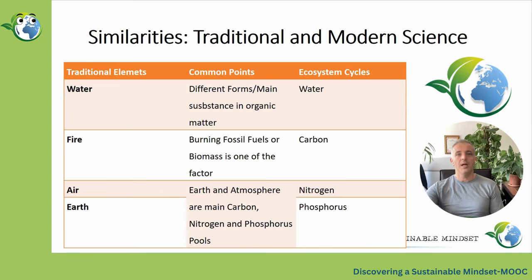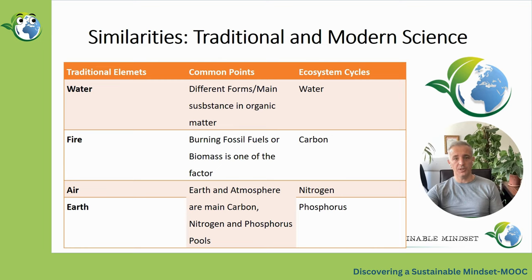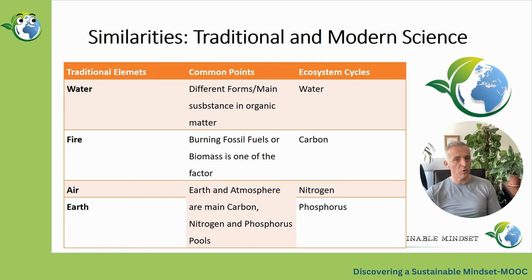However, as science has developed and evolved, our traditional ideas about the elements and their dynamic movements have changed considerably. According to the latest point reached by science, the main cycles in ecosystems consist of the dynamic movements of four elements: water, carbon, nitrogen, and phosphorus.